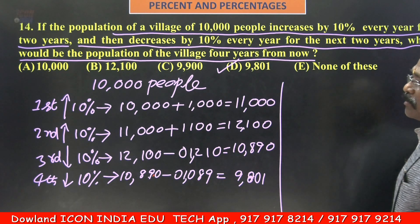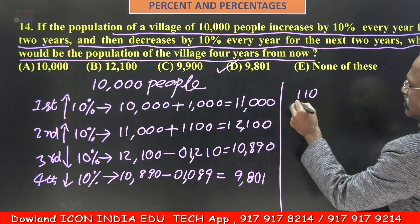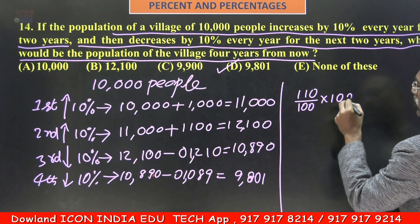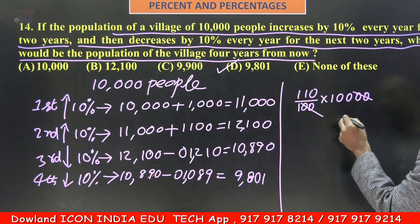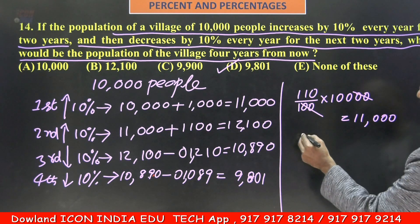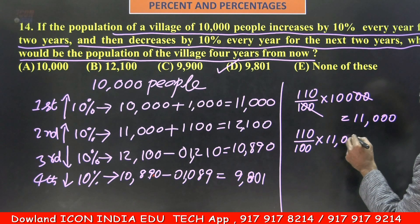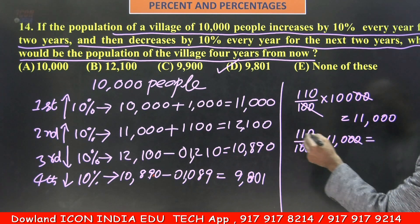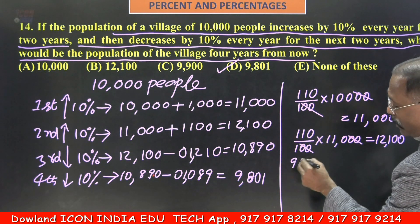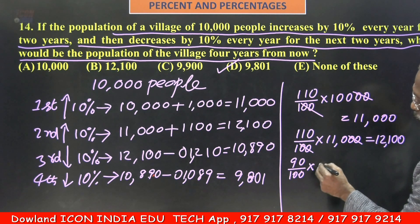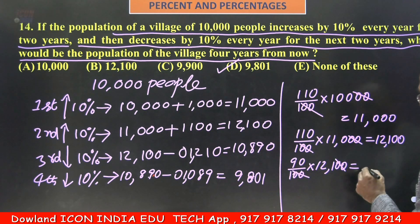Like what? 10% increase means 110 divided by 100 into original population 10,000 — you get 11,000 directly. Again 110 by 100 into 11,000 gives 12,100. Then for decrease: 90 by 100 into 12,100 — zeros cancel, leaving 121 into 9, which equals 10,890. Again 90 by 100 into 10,890 gives 9,801.